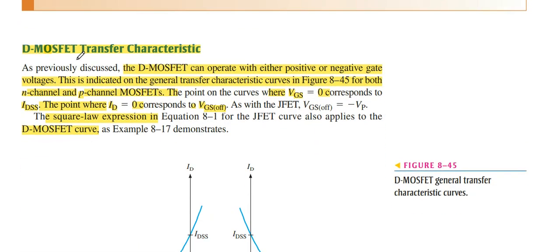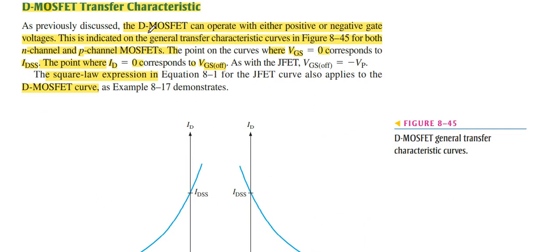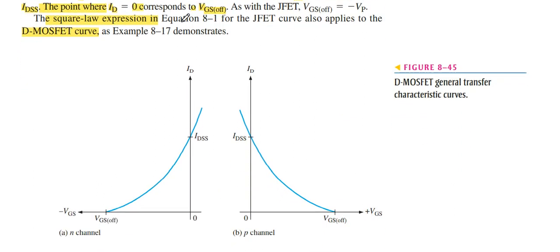Now we go to the D MOSFET transfer characteristics. This is for N-channel, this is for P-channel. It is similar to the JFET. When N-channel D MOSFET, VGS is negative, while in P-channel, VGS is positive.